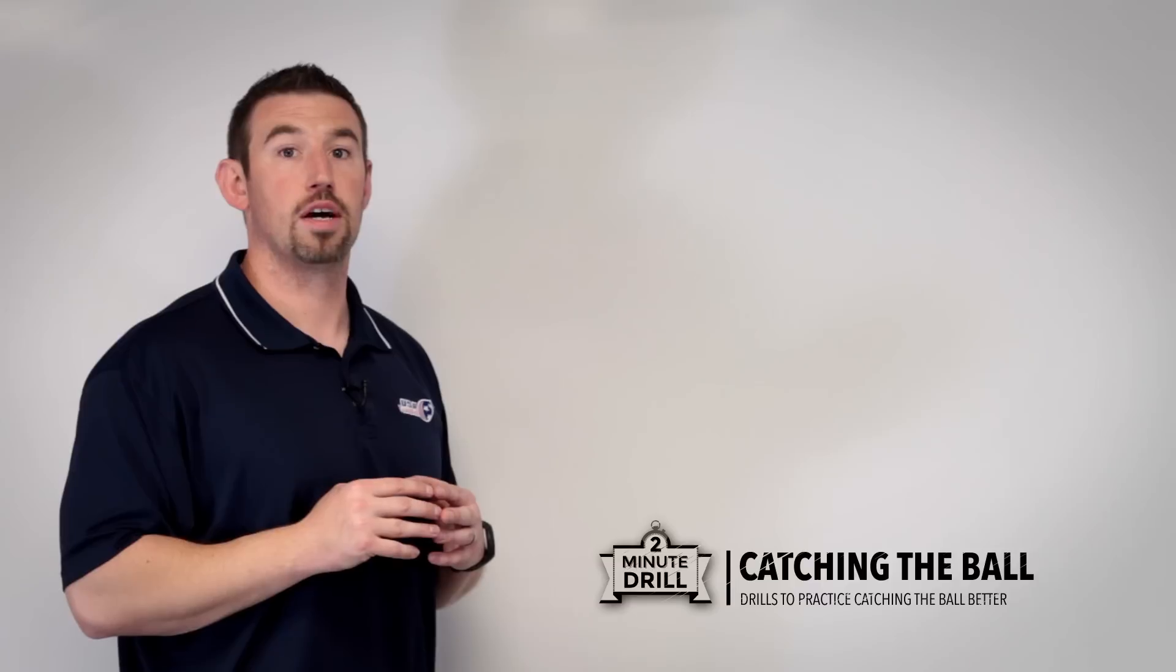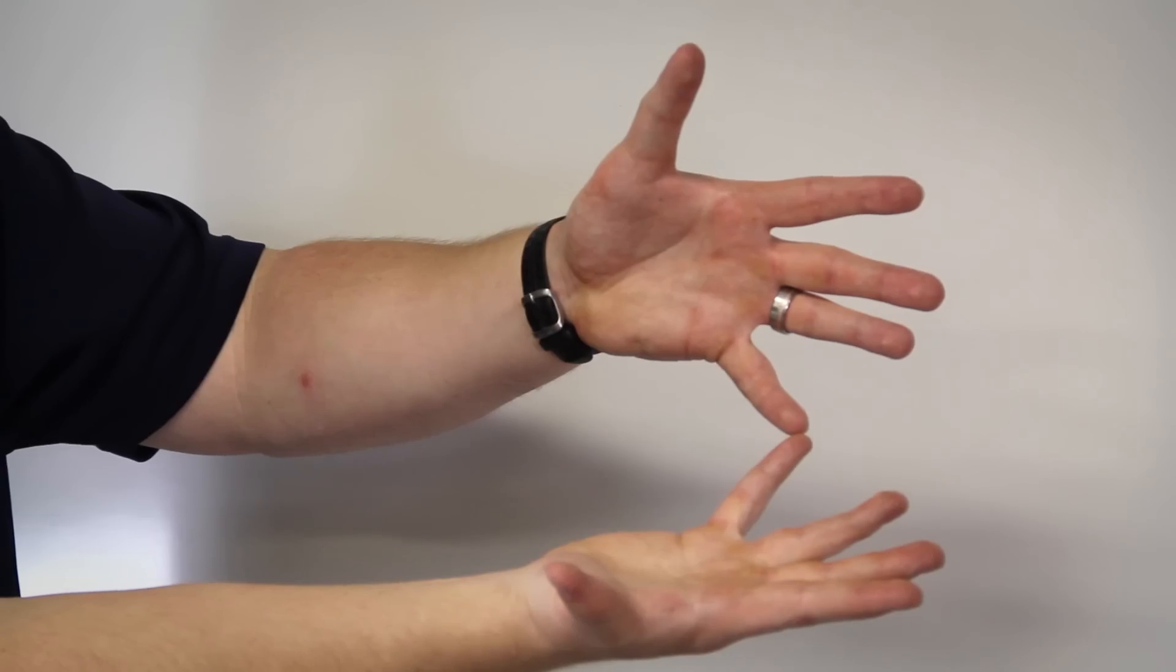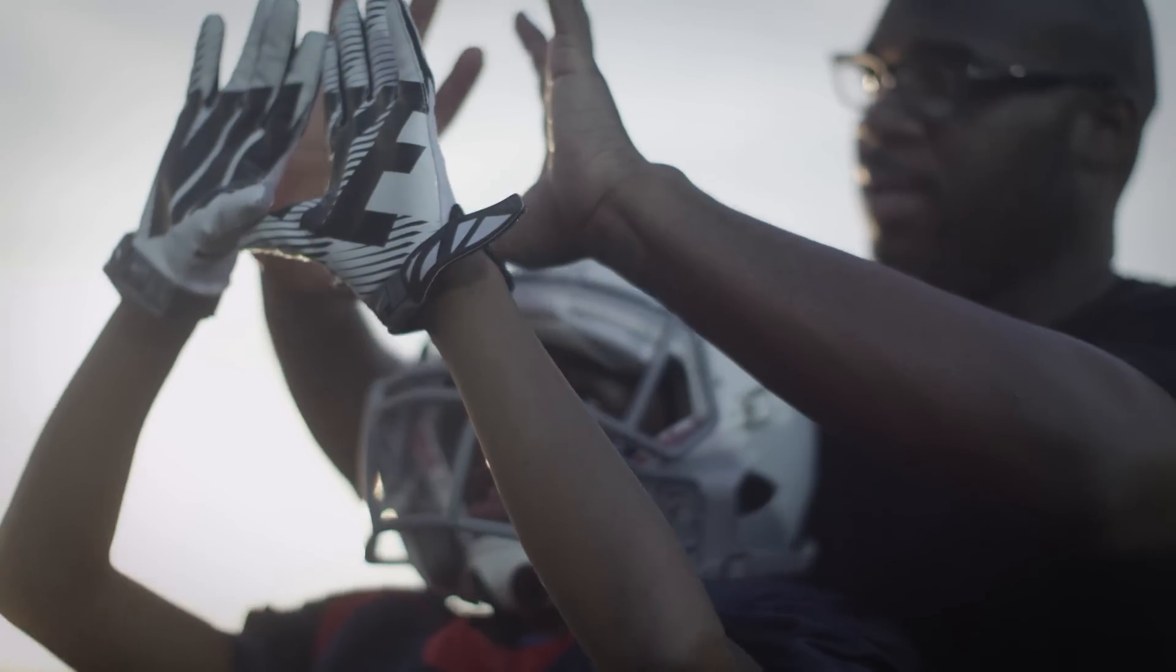First thing we want to do is work on hand position. Being able to identify when to have our thumbs together and when to have our pinkies together depending on if the ball is thrown high or low.